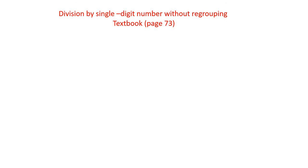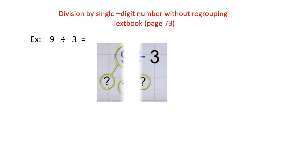We will talk about division by single digit numbers. We will start with simple numbers — 9 divided by 3. You ask yourself: how many groups, how many numbers in each group? If I want to cut 9 into 3 groups, I will have how many in each one of them?